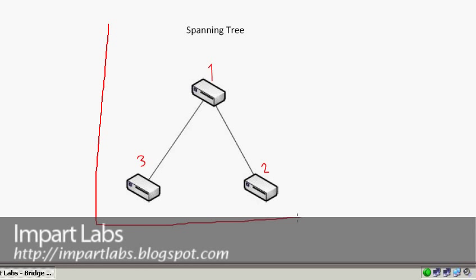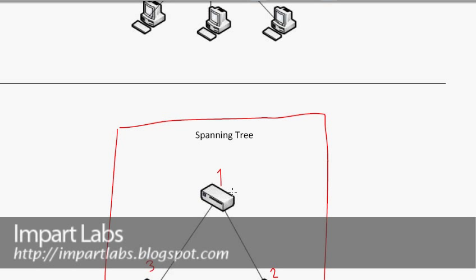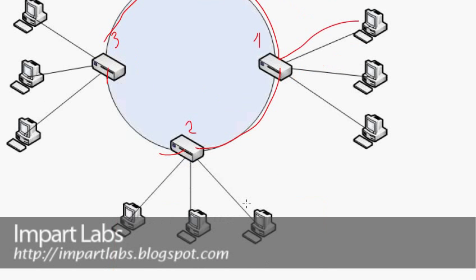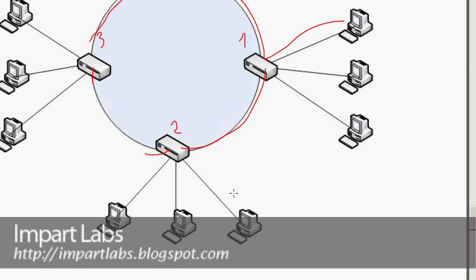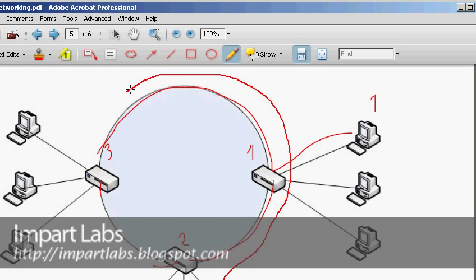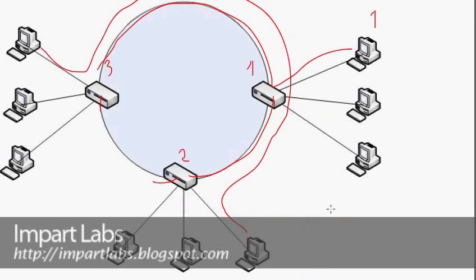For the spanning tree to be created, each bridge has a bridge ID and a priority number. They send BPDUs — Bridge Protocol Data Units — which include the bridge ID, the priority number, the bridge addresses, and other useful information for neighboring bridges. Once the spanning tree is fully created, there is only one possible path for any workstation to reach another workstation in the network.